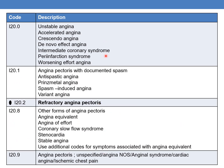Here is the complete list of angina pectoris codes. I20.0 deals with unstable angina, also called accelerated angina, crescendo angina, de novo effort angina, intermediate coronary syndrome, pre-infarction syndrome, and worsening effort angina. Whenever the physician documents any of these terms, you need to code I20.0.